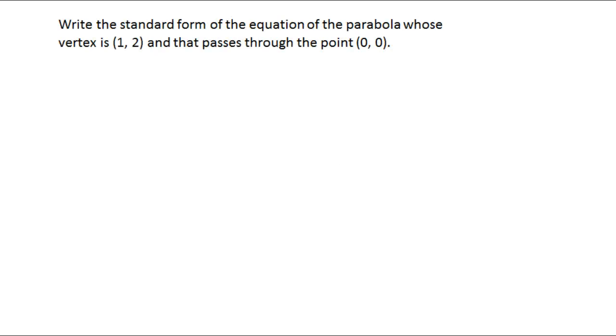So how can I get the equation of a parabola if I know its vertex and one of the points it passes through? Let's just plug everything in that we know. We're going to have y = a(x - h)² + k.